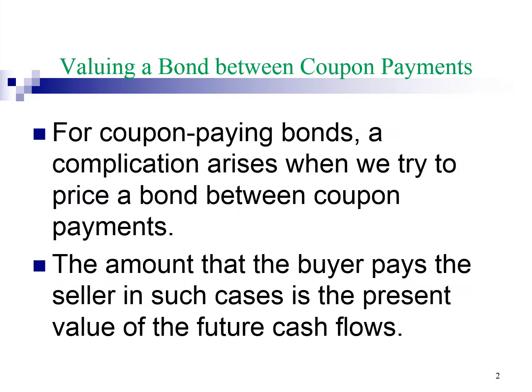For coupon paying bonds, a complication arises when we try to price a bond between coupon payments. This means the settlement date happens in between two coupon payment dates. No matter how the complication is, take note that the amount the buyer pays the seller is always equal to the present value of the future cash flows. If you remember this principle, you won't go wrong in bond price valuation.